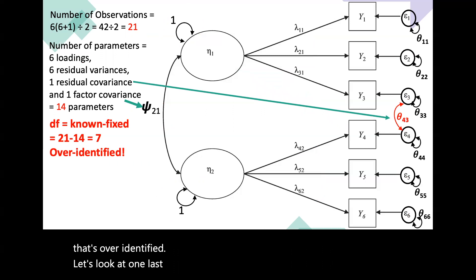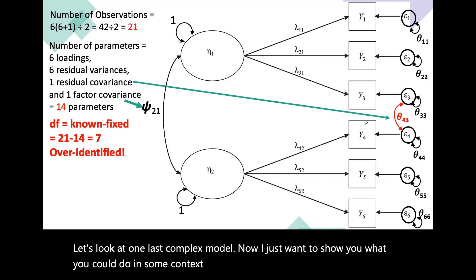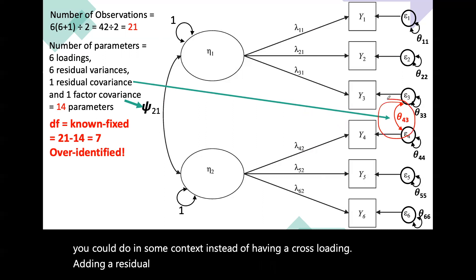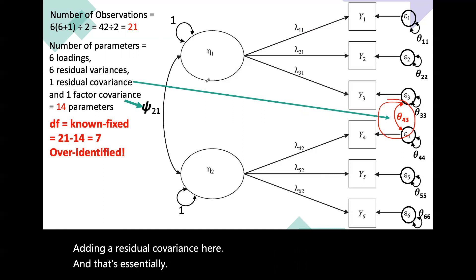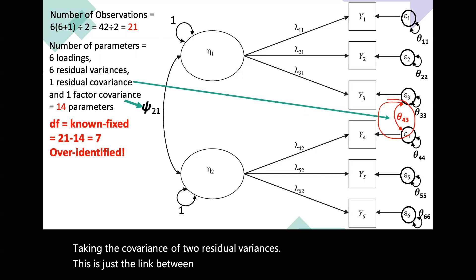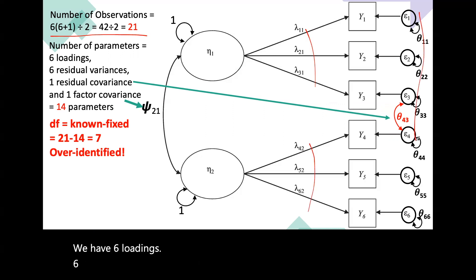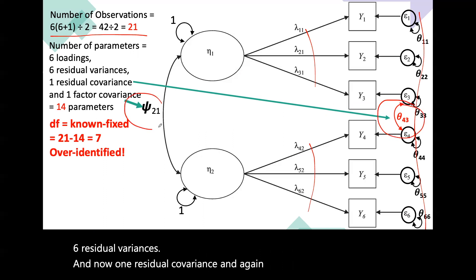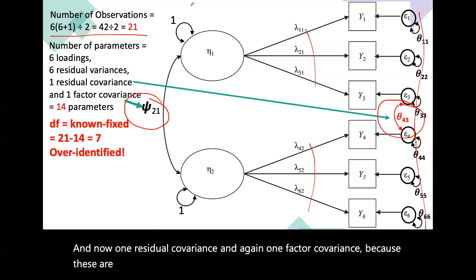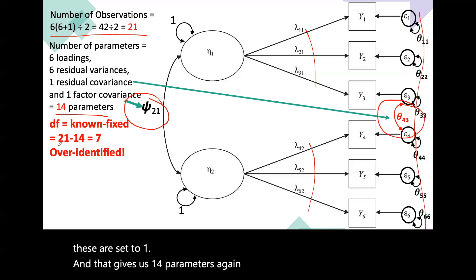Let's look at one last complex model. Instead of a cross-loading, I'm adding a residual covariance — essentially taking the covariance of two residual error terms. The number of observations doesn't change because our items didn't change, so we still have 21. We have six loadings, six residual variances, one residual covariance, and one factor covariance — because factor variances are set to one — giving us 14 parameters again. Degrees of freedom: 21 minus 14 equals seven — a good over-identified model.